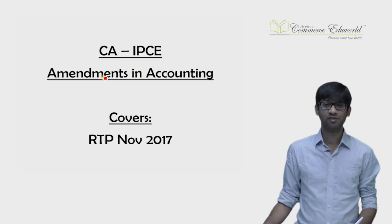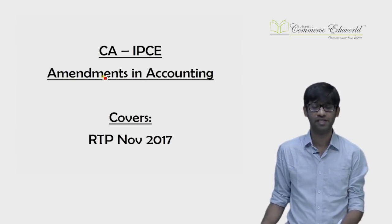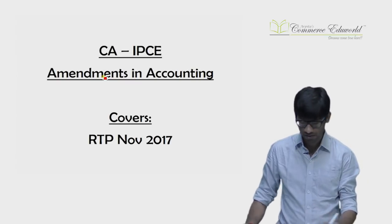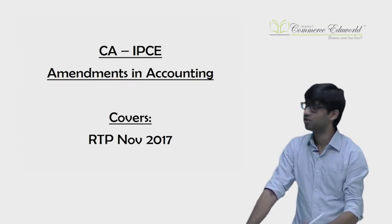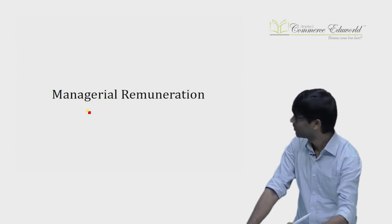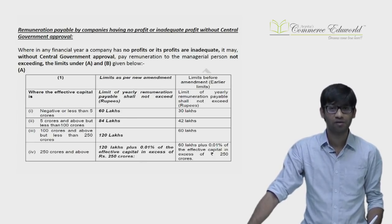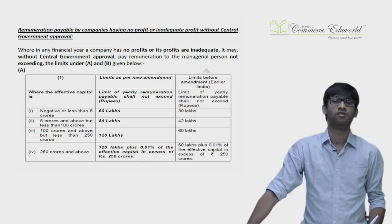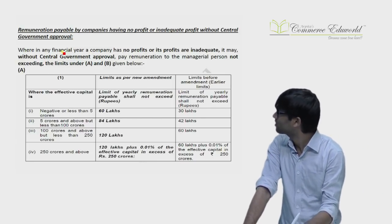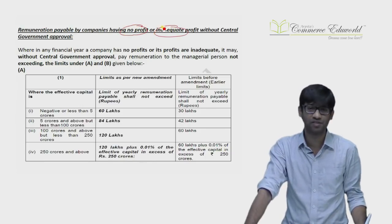Hello students, let us discuss the amendments given in the November 2017 RTP for IPCC accounts paper. The amendment is in the chapter known as Manager's Remuneration. The limits which were given earlier have been revised — specifically, the limits in case of companies having no profit or inadequate profits.